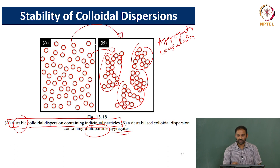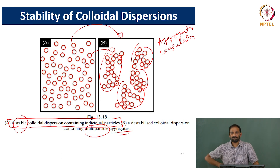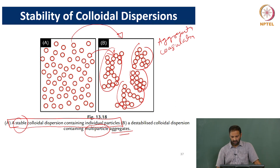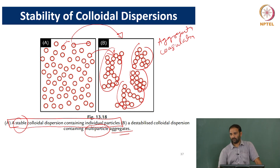Why do you think things will go from the stable state to the aggregated state? The answer is that if the interaction between the 2 particles is more favorable than the interaction between the particle and the fluid, aggregation will occur.